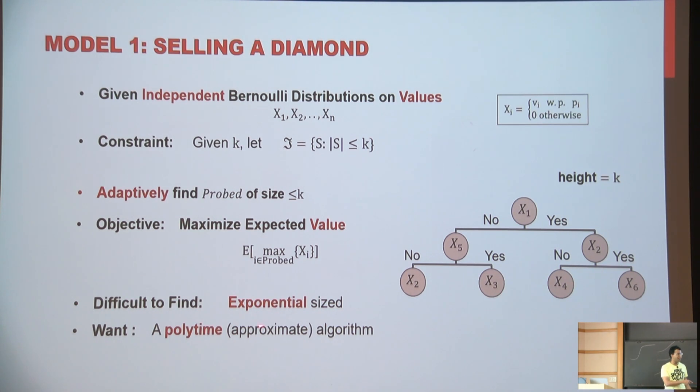So we want a polynomial time algorithm. Maybe my guarantees are approximate. So I'm not getting maybe the optimal decision tree's expected value. I'm getting some other algorithm, which runs efficiently, but maybe it loses something in the performance.